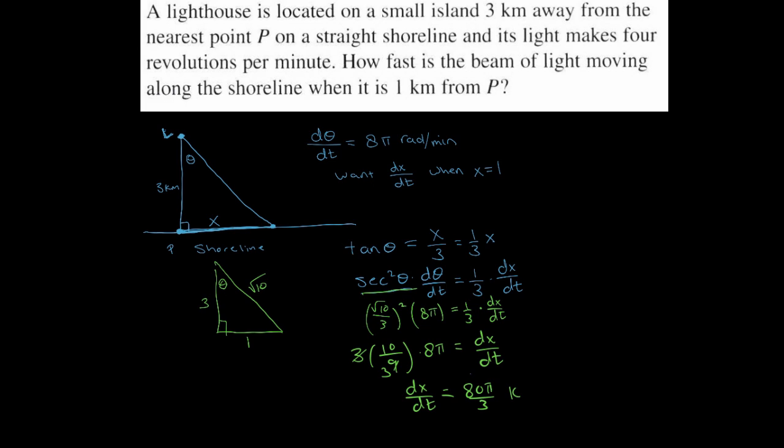And the units there would be kilometers per minute. Now incidentally, 80π over 3 is about 83.8 kilometers per minute.